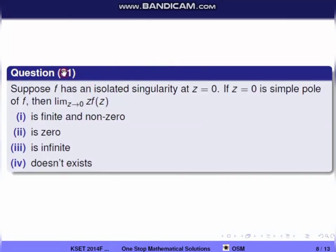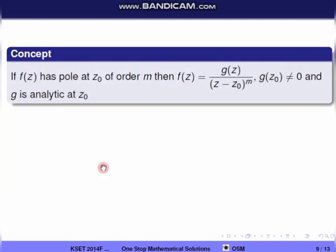Next question, question 31: Suppose f has an isolated singularity at z equal to 0. If z equal to 0 is a simple pole of f, then limit z tends to 0 of z·f(z) is what? The concept: if z0 is a pole of order m, then f(z) = g(z)/(z minus z0)^m, where g(z) is non-zero and analytic at z0.